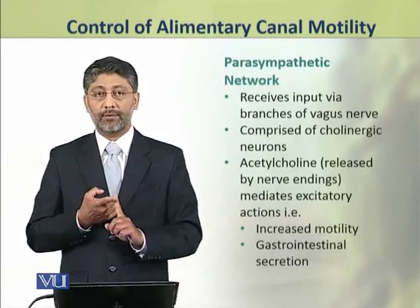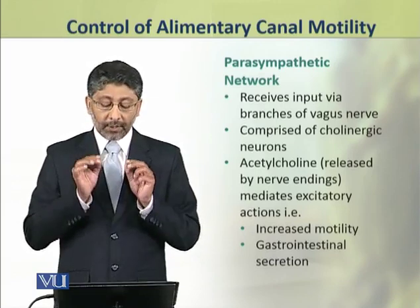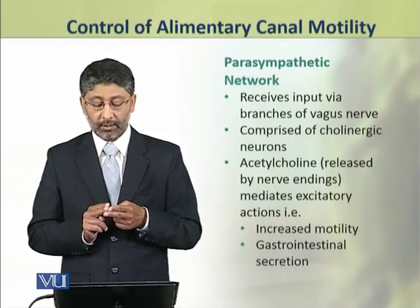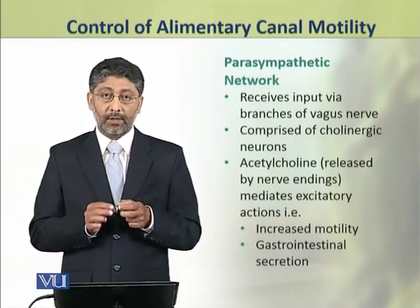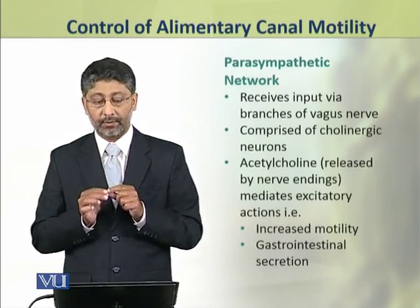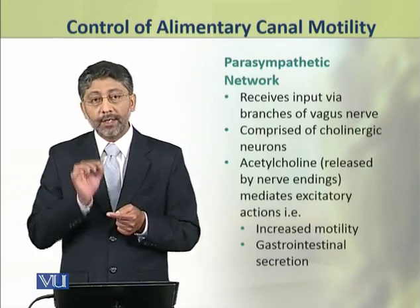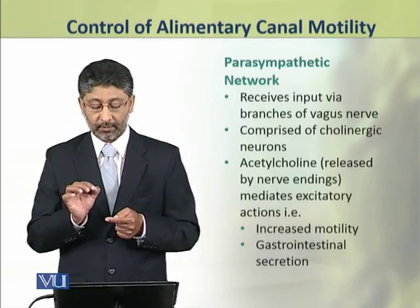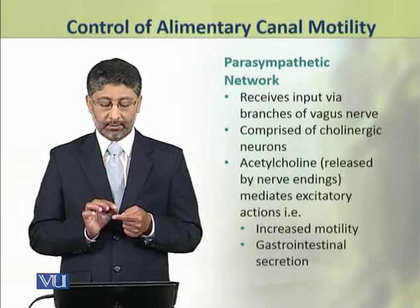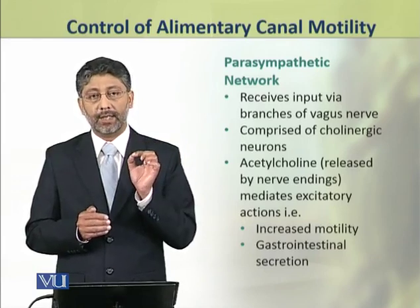First we shall discuss the parasympathetic network of neurons, which receive their input via the branches of the vagus nerve. These neurons are comprised of cholinergic nerves or neurons. Cholinergic neurons produce acetylcholine, which is released from their nerve endings. Acetylcholine mediates excitatory actions, for example increased motility and increased gastrointestinal secretions.